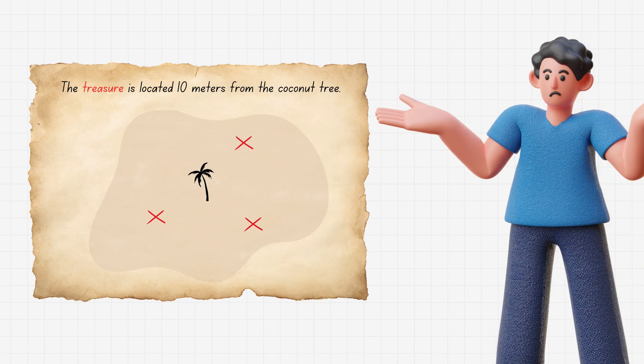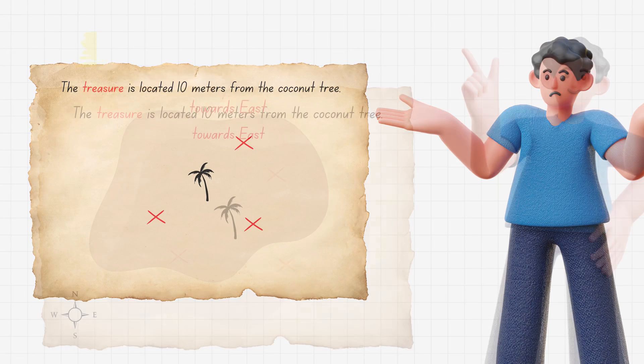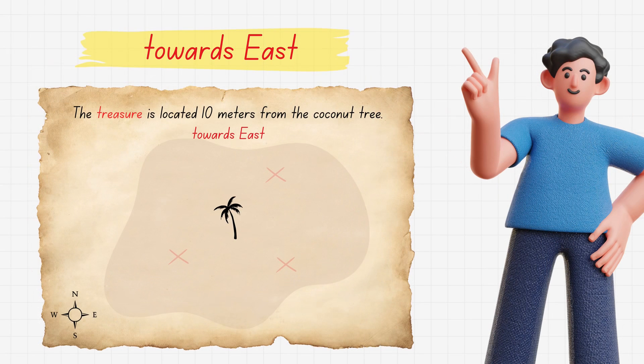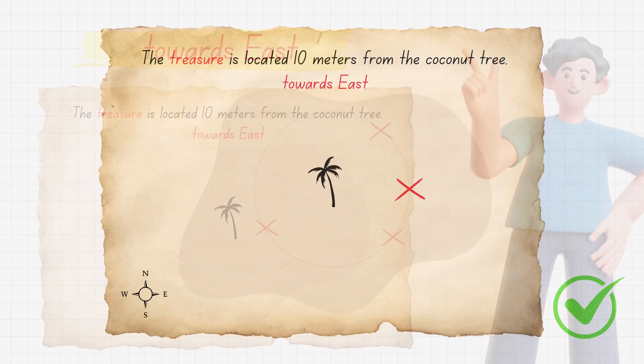Without a direction, finding the treasure becomes incredibly difficult. Now, what if the map provides a direction along with the distance? Suddenly, it's not such a big deal.